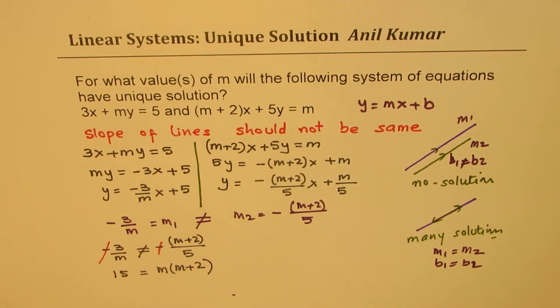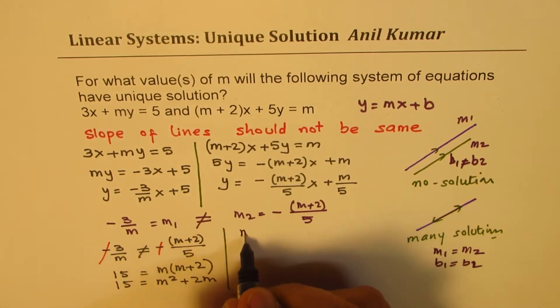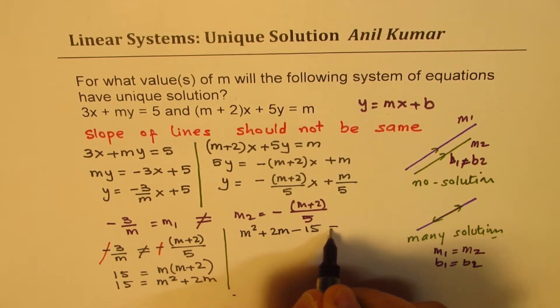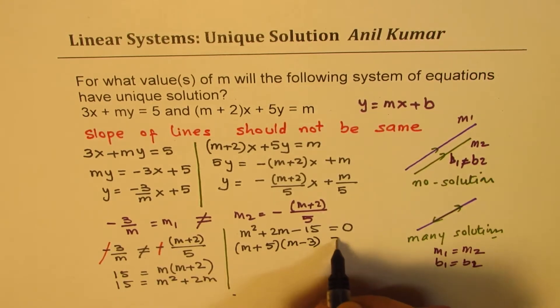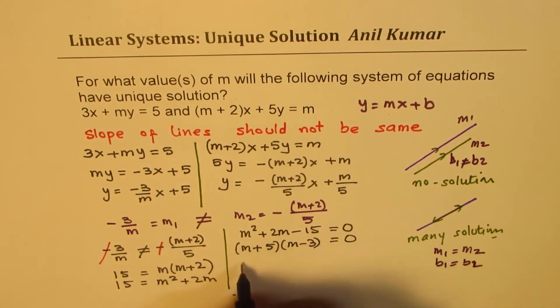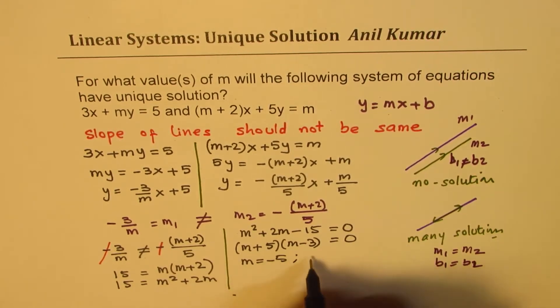So we have a quadratic equation which is 15 equals m square plus 2m. We can bring all of them together and solve for m, so we have m square plus 2m minus 15 equals 0. 5 times 3 will work for us, so we have m plus 5 times m minus 3 equals 0. That gives you two values: m equals minus 5 and m equals 3.